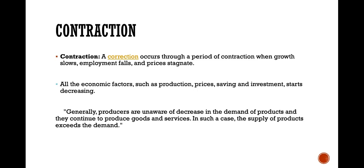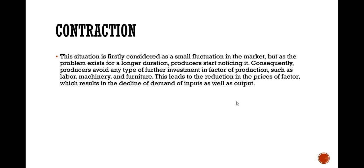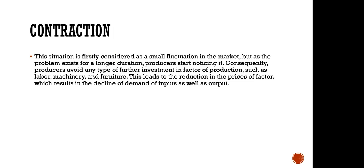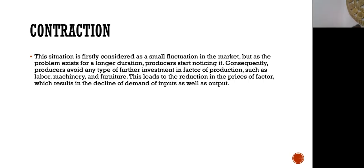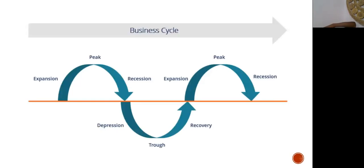When we learn supply and demand on the charts, we know that supply is an area for sellers and demand is an area for buyers. When price hits a zone of supply, that's an area for sellers. These people have enough product but there is no one to buy it — so now they have to reduce the price drastically, which will affect their profits. This period can be known as fluctuation in the market, but as time goes on you begin to see it is serious and it moves into the next phase, which is the trough.